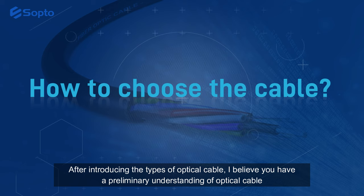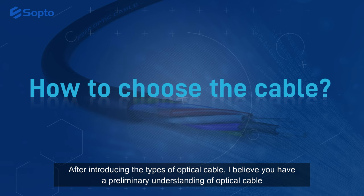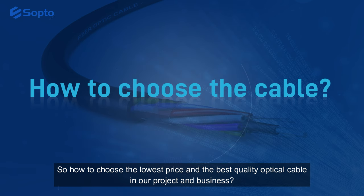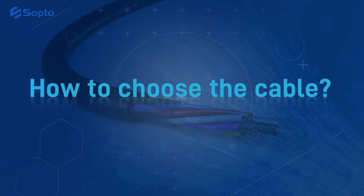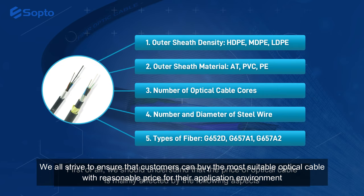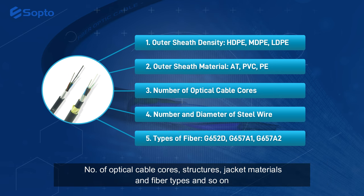After introducing the types of optical cable, I believe you have a preliminary understanding. So how to choose the lowest price and best quality optical cable for your project? This is a concern of many customers. The price of optical cable is mainly affected by the following aspects: number of optical cable cores, structures, jacket materials, and fiber types.